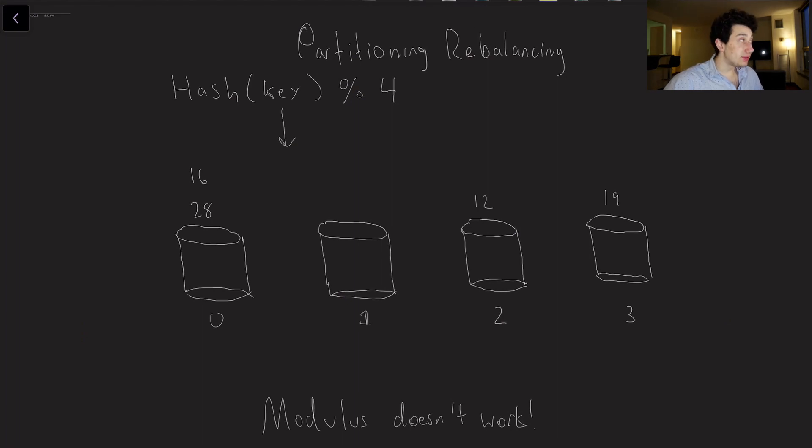Okay, so I'm going to start off this video by talking about partitioning rebalancing and one general schema that naively we might use to partition some of our keys. So let's imagine we have got a bunch of different keys, you know, like Jordan, Corinna, Kate...